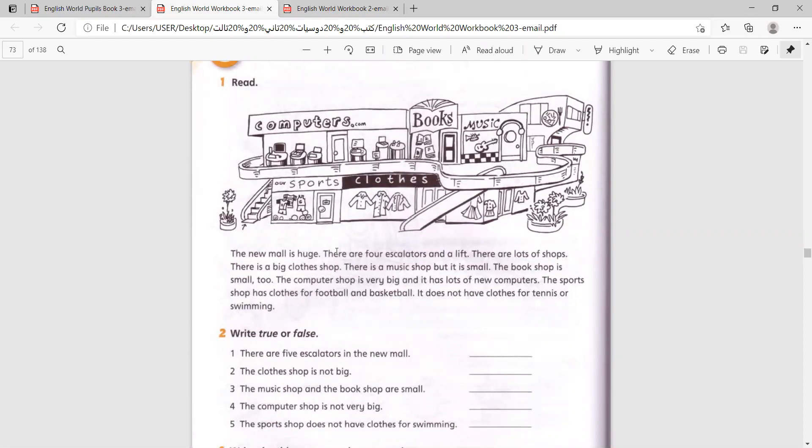The new mall is huge. There are four escalators and a lift. There are lots of shops. There is a big clothes shop. There is a music shop, but it is small. The bookshop is small too.